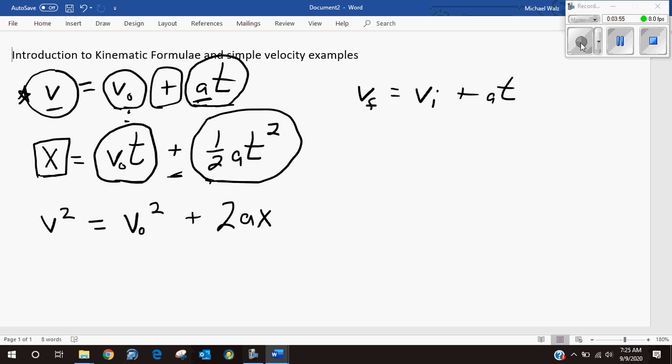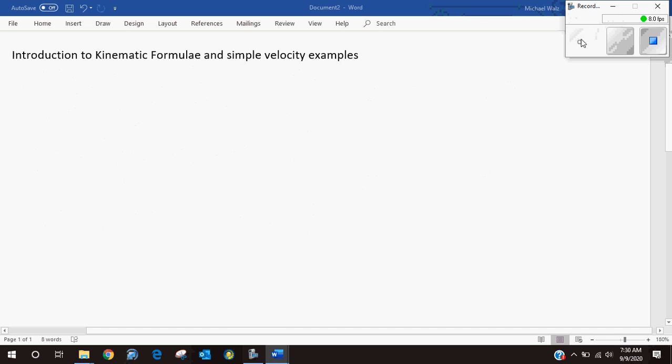Now all of these are assuming that acceleration is a constant. If we have a change in acceleration that's called jerk, that's the physics term. And then the change in jerk is called snap. So here's that quick video on the explanation of the kinematic formulas, real simple.